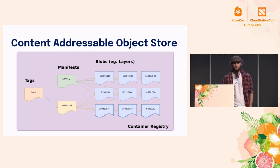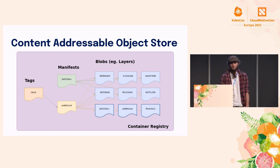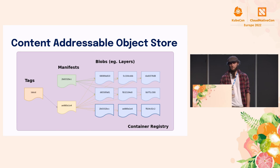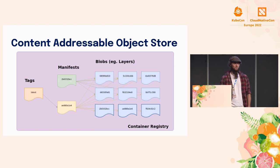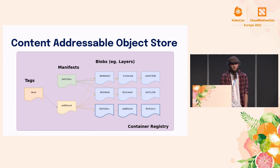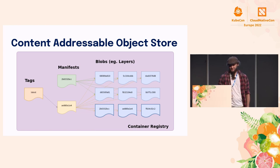In a container registry, we have a few different kinds of objects. First, we have blobs — these are the basic objects stored in a container registry. Then we have manifests, which are metadata about images and the contents of the blobs. They tell us what layer blobs are stored in each image — you can think of manifests as a set of pointers to layers. Since manifests and blobs are identified by their contents, they're immutable. Change the contents and you change the identifier as well.